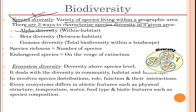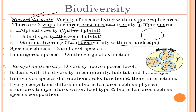There are three ways to characterize species diversity in a given area: alpha diversity, beta diversity, and gamma diversity. Alpha diversity is within a habitat, beta diversity is between habitats, and gamma diversity is the total biodiversity within a landscape — the sum total of all of these. Species richness is given by the number of total species present in a given geographical area.